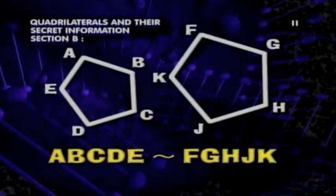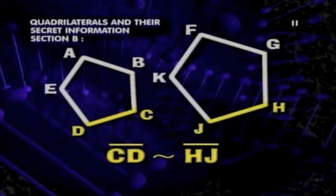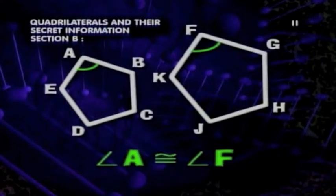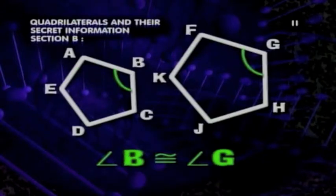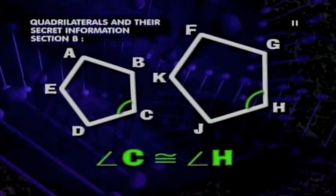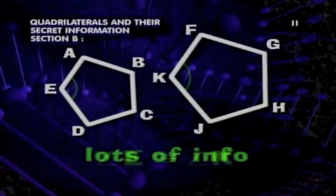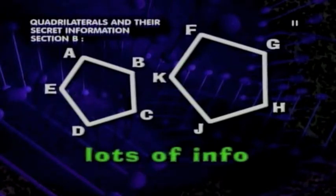And since the pentagons are similar, that means all the corresponding sides are in proportion as well. In addition, we know that angle A is congruent to angle F, angle B is congruent to angle G, angle C is congruent to angle H, angle D is congruent to angle J, and angle E is congruent to angle K. So there's a lot of information to be had, but enough common sense. Let's get to real deductive thinking.